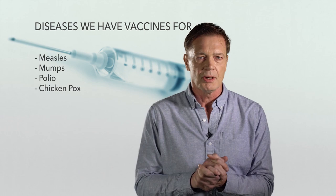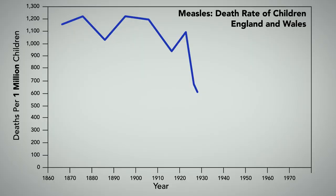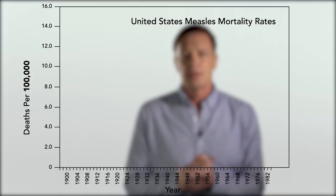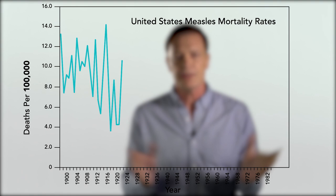Data are available for measles, mumps, and polio. Here we see the decline in mortality in the UK — a graph we're becoming quite familiar with now. Here we see a similar image from the United States showing exactly the same pattern of decline in mortality in advance of the vaccine being introduced.